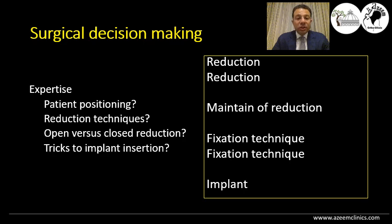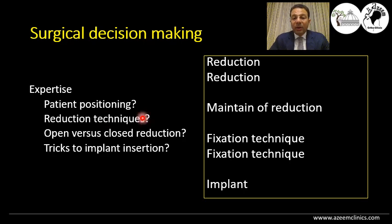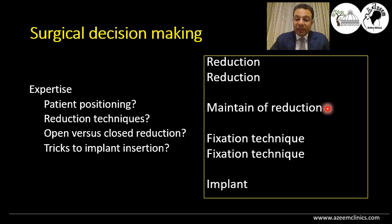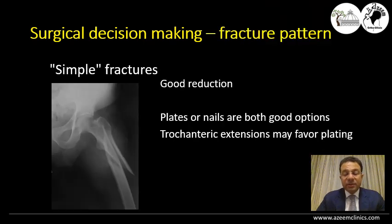The surgical decision making depends on the expertise of the surgeon, and there is a lot of variability based on the fracture pattern and the patient's body build, which will change the surgeon's opinion concerning positioning, reduction techniques, and implant selection. However, the principles and keys of success remain the same in all patients: reduction, maintaining the reduction, proper fixation techniques to avoid displacement, and finally the choice of implant — which comes last, not first. In simple fractures, it is advised to achieve the best reduction possible.